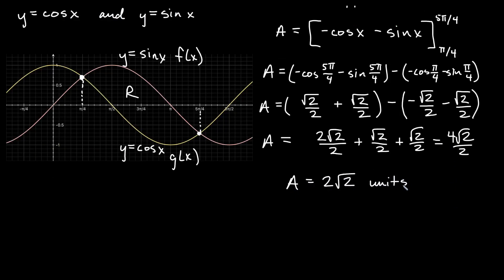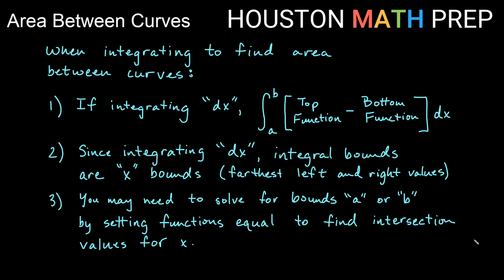Quick summary: when integrating to find area between two curves using dx, it's always the integral of the top function minus the bottom function. a and b are your leftmost and rightmost points — since you're integrating dx, those are x bounds. The bounds may not always be given; you may need to set the functions equal to each other to find intersection points and get the x values for a and b.